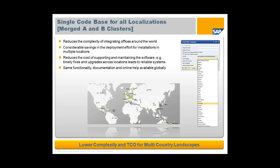We've also moved to a single code base for all of our localizations — merging all of the old A, B and C clusters together. This reduces the complexity of integrating offices around the world, delivering considerable savings in deployment effort for installations in multiple locations. You're now able to reduce the number of servers required because of this single code base. It reduces the cost of supporting and maintaining the software. Timely fixes and upgrades can be delivered across the solution simultaneously, and the same functionality, documentation and online help are available globally — resulting in lower complexity and lower total cost of ownership for multi-country landscapes.